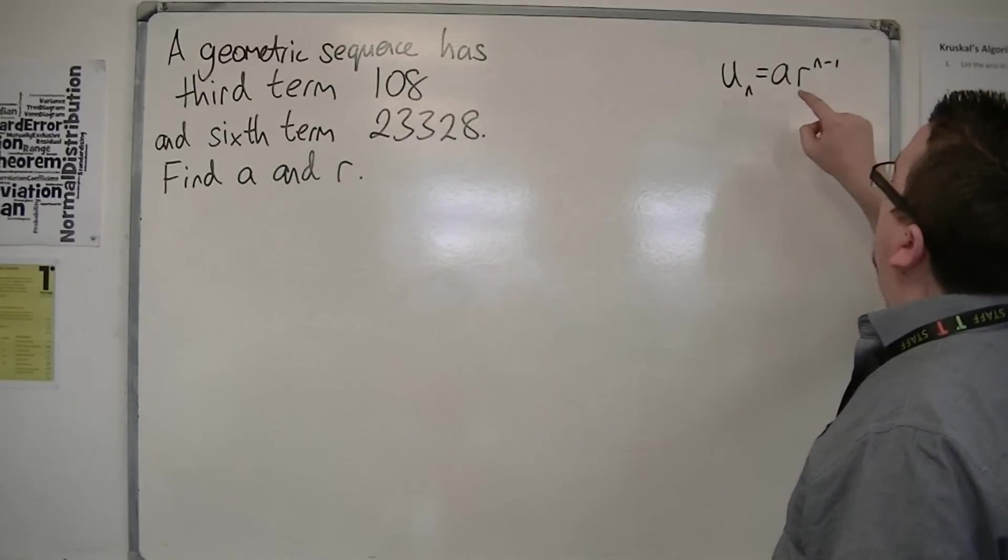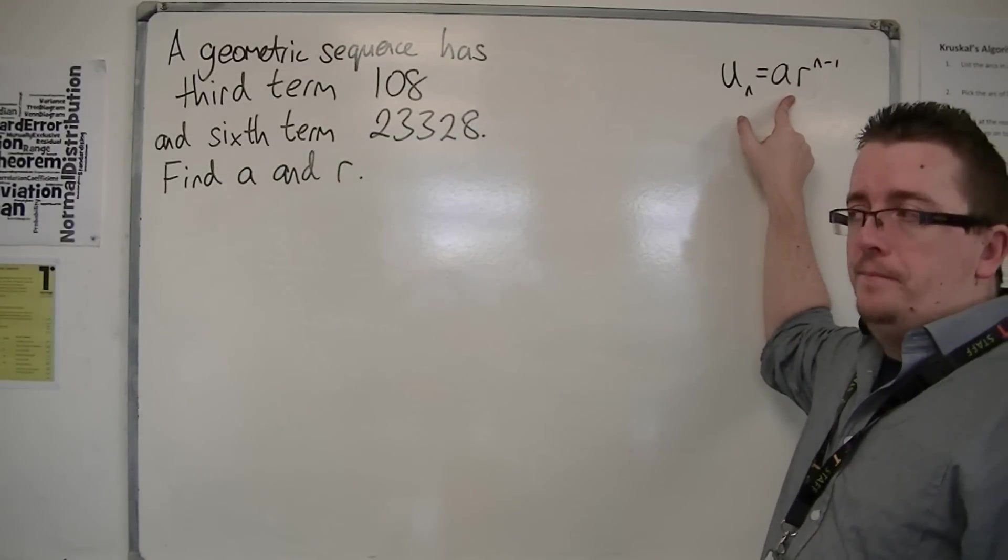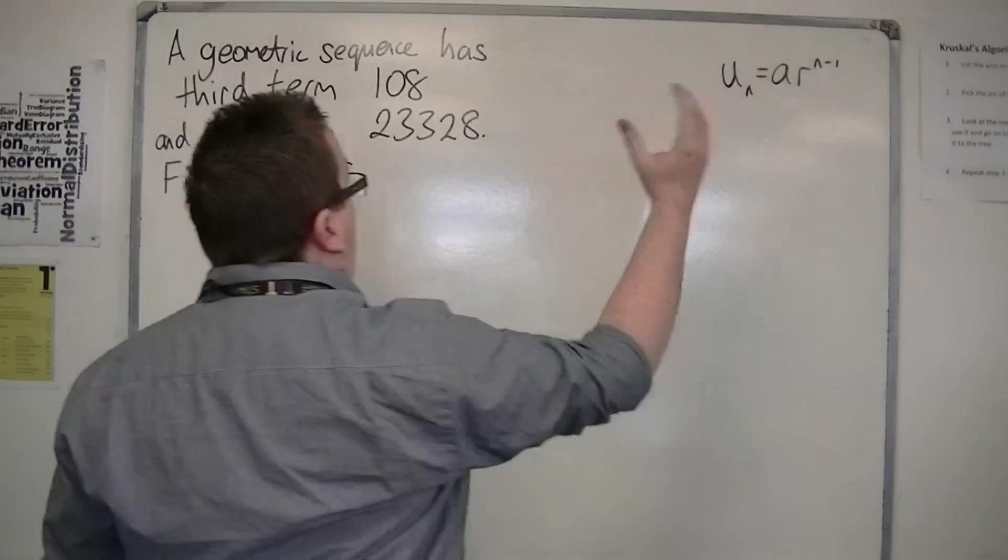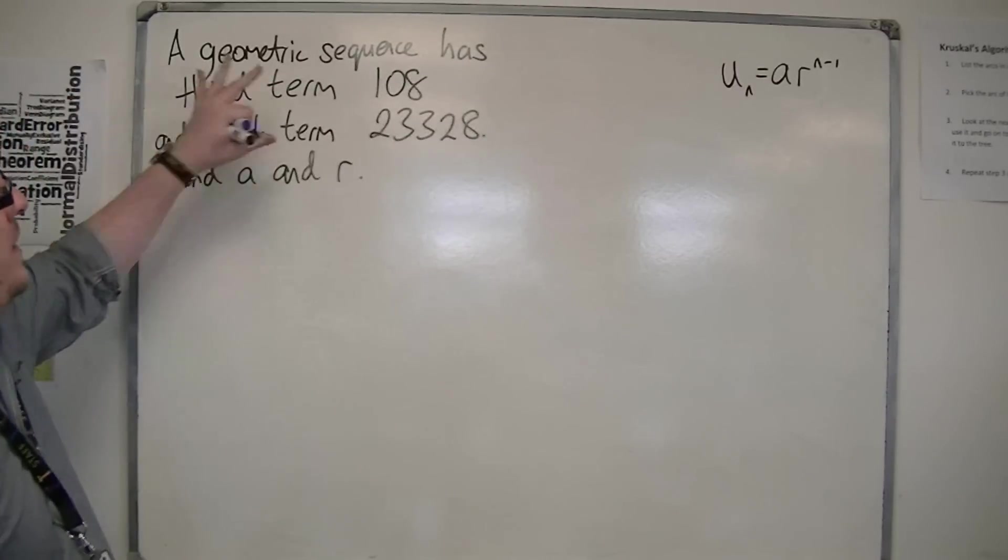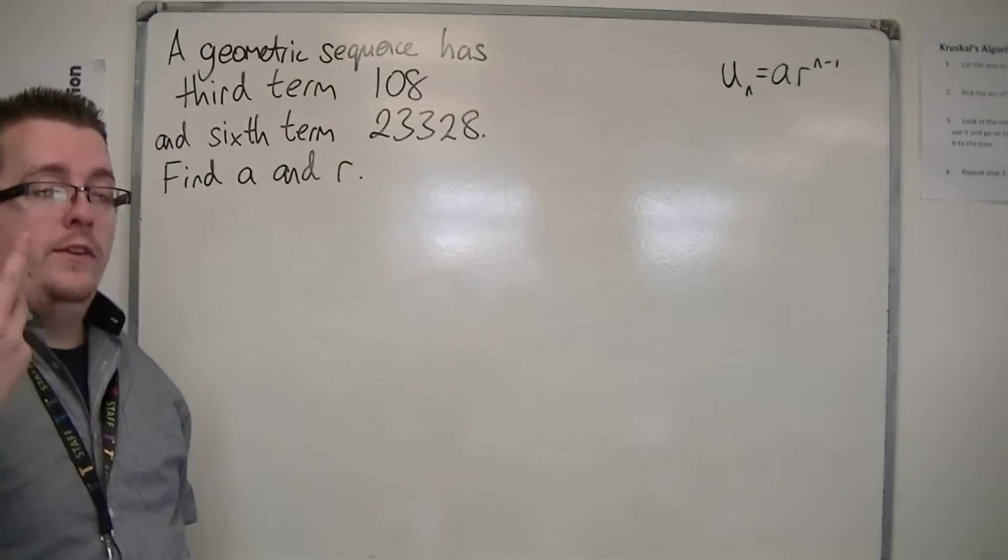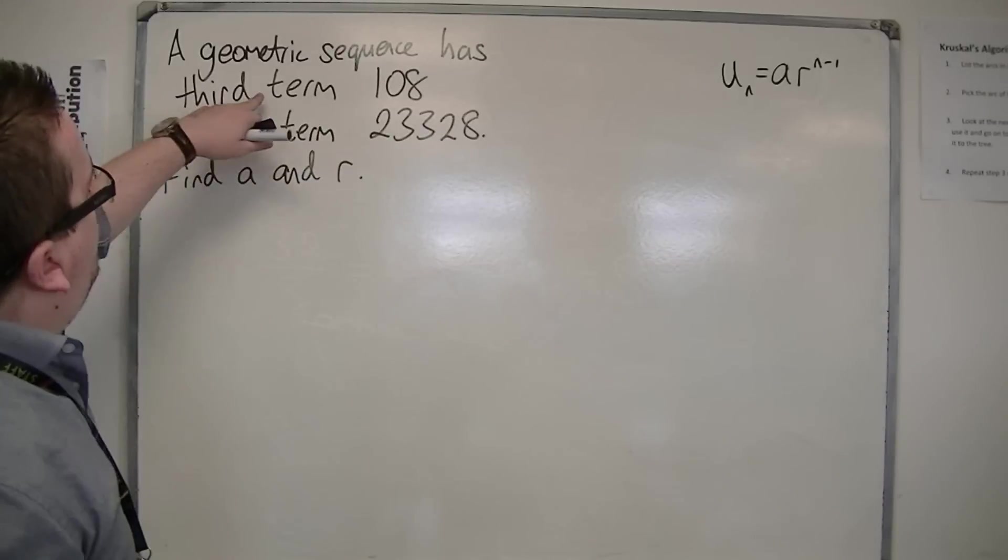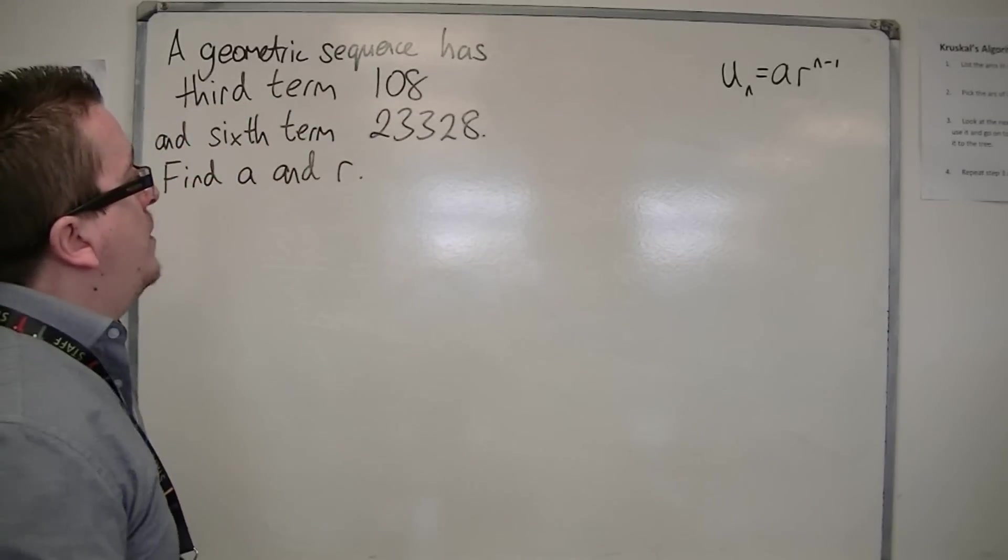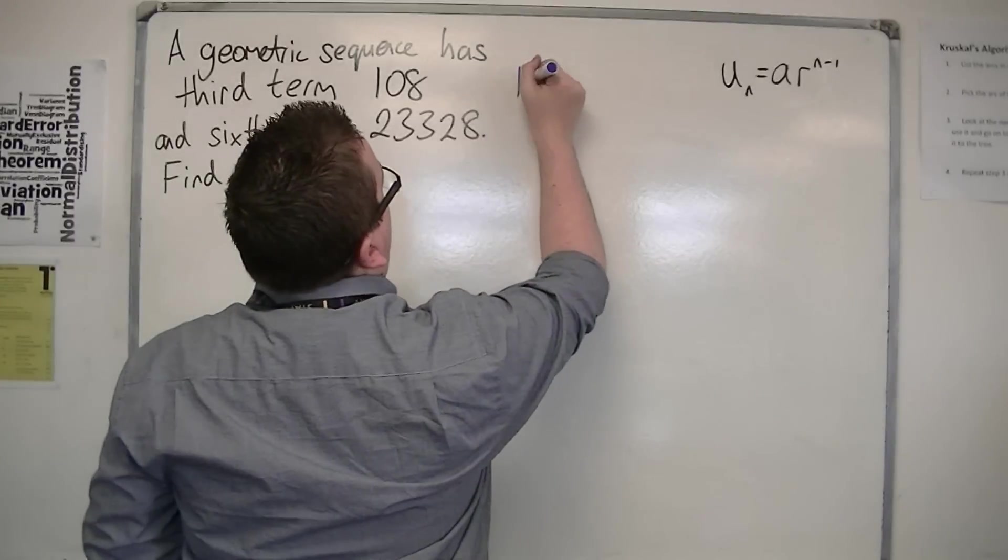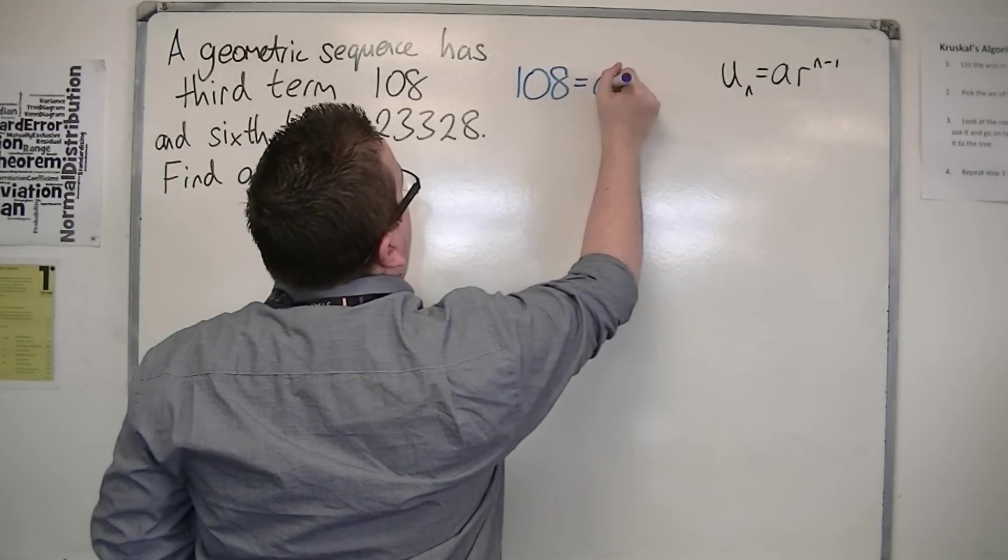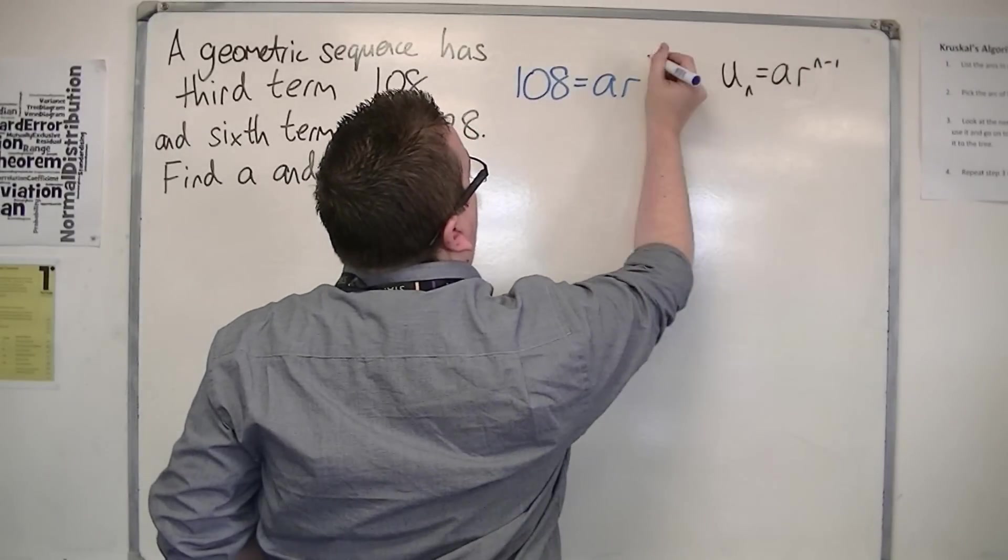They are linking directly to this equation here, the nth term. As we did for arithmetic sequences, we need to know how we can go from this information to two separate equations. If the third term is 108, then n is 3, so 108 = AR^(3-1), which is AR^2.